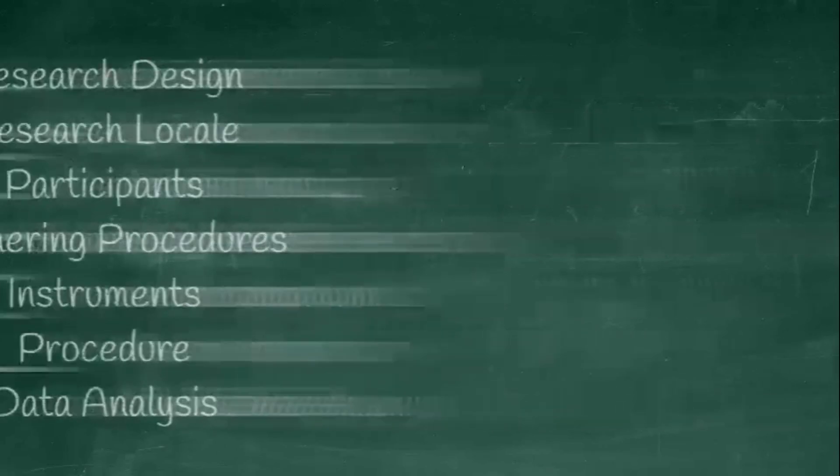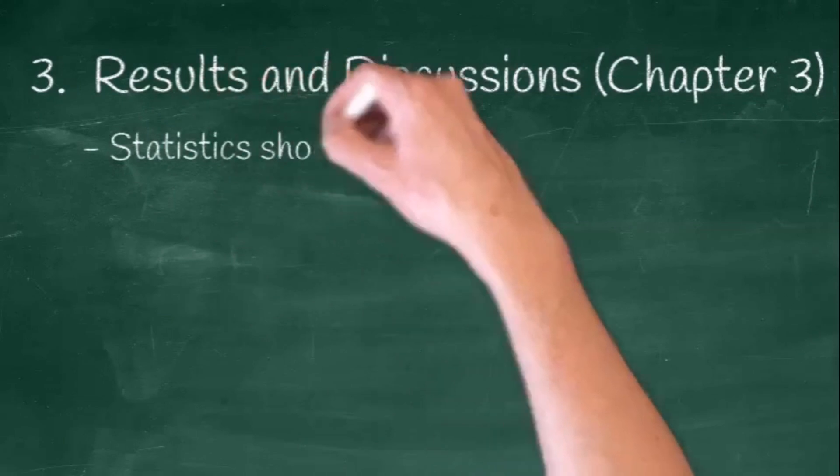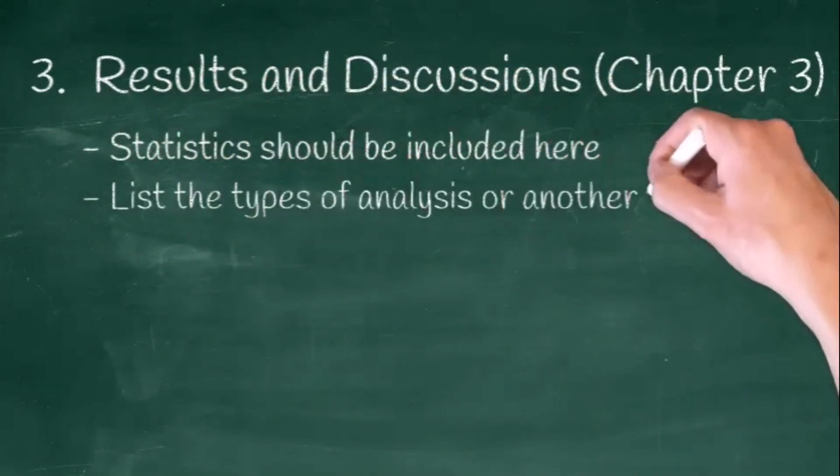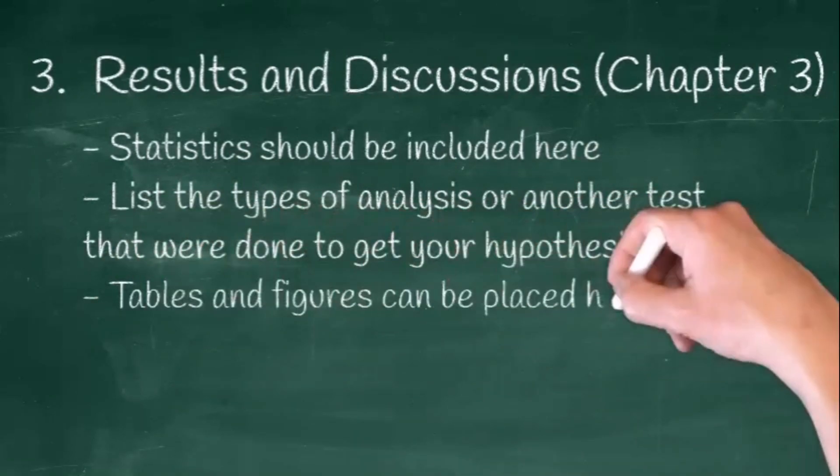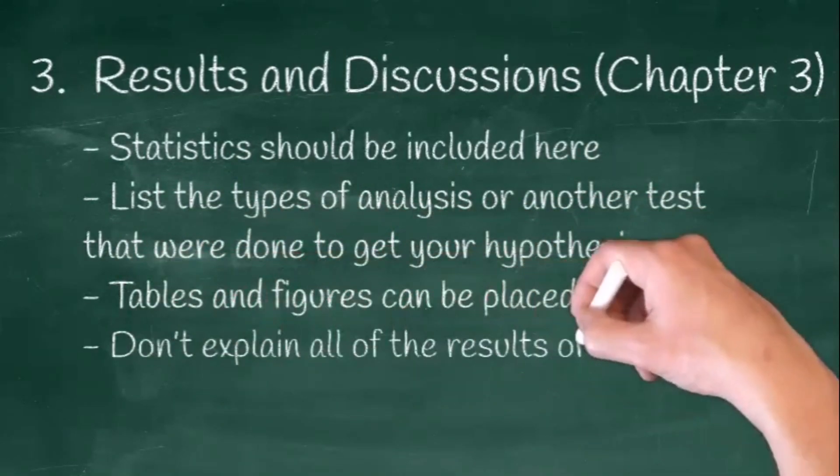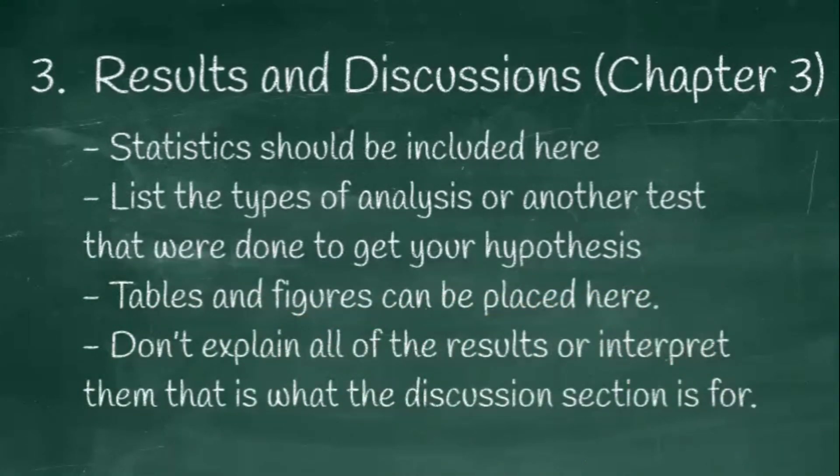Another important part of the research is the results and discussions or chapter 3. Since we are dealing with quantitative research, statistics should be included here. List the types of analysis or another test that were done to get your hypothesis. Tables and figures can be placed here. Don't explain all the results or interpret them.